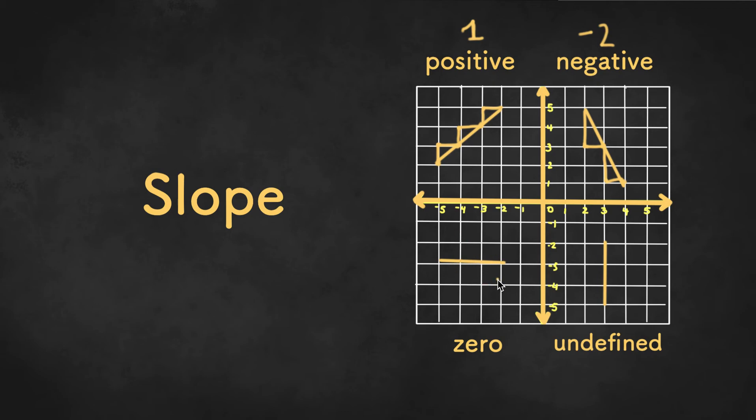For 0 slope, the slope is always 0, and undefined slope we can never calculate it.